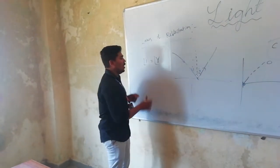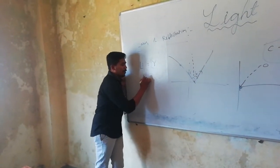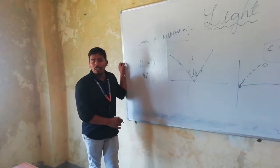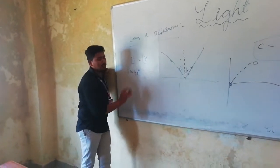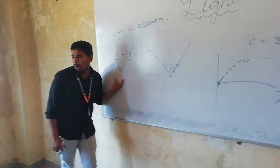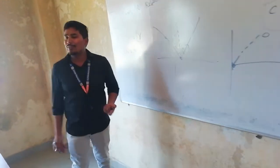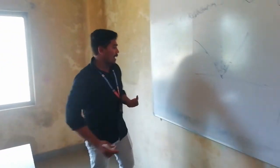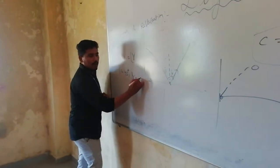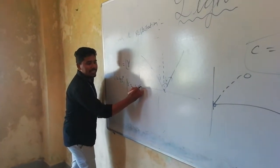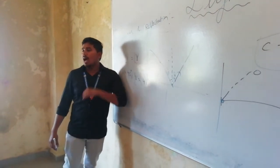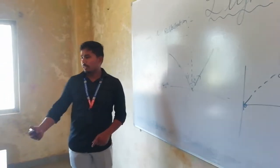Suppose the angle of incidence is taken as 45 degrees. The angle of incidence is given as 45 degrees. What is the angle of refraction? The answer is exactly 45 — because the angle of incidence is equal to the angle of reflection.